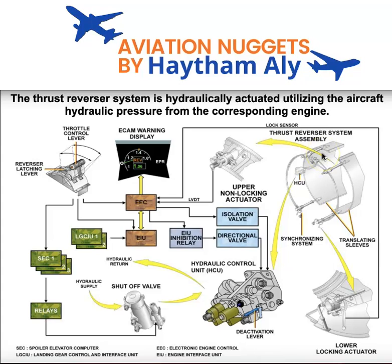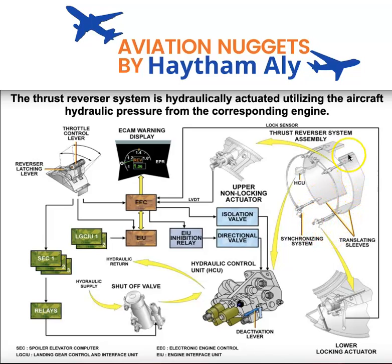What is the type of thrust reverser on the V2500 engine? It is of the aerodynamic blockage type. We have two translating sleeves on each fan duct. They move forward — each translating sleeve is powered by two actuators, an upper actuator and a lower actuator. When the translating sleeve moves forward, it moves thin blocker doors that redirect the fan discharge airflow into the forward direction to produce reverse thrust.